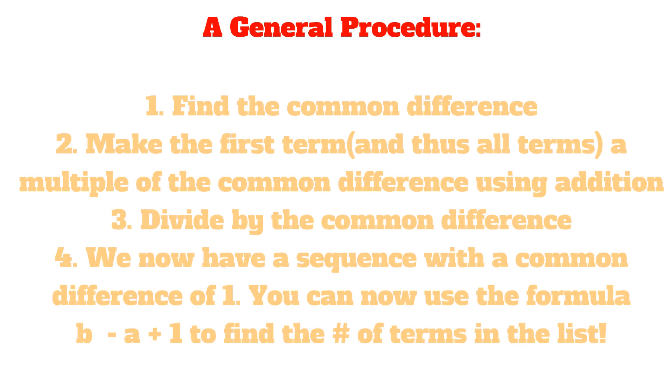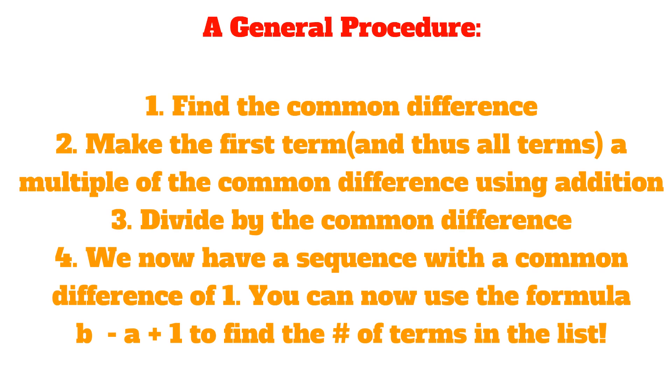A general procedure to tackle these types of lists. Our first step is to find the common difference. Step number 2 is to make the first term, and thus all the other terms, a multiple of the common difference using addition or subtraction on each of the terms. Third, divide by the common difference. Fourth, we now have a sequence with the common difference of 1. We already know how to tackle those. You can now use the formula b minus a plus 1 to find the number of terms in this list. Remember, b is the last term, a is the first term.